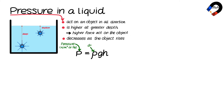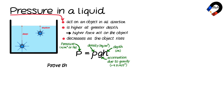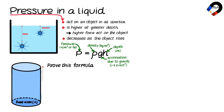The equation of pressure in a liquid is P = ρgh, where P is pressure in newtons per meter squared (pascals), ρ is the density in kilograms per cubic meter, g is the acceleration due to gravity equal to 9.8 meters per second squared, and h is the depth in meters.